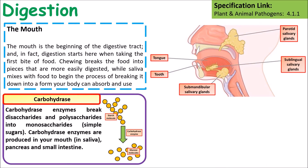The mouth is the beginning of the digestive tract. In the mouth we chew food, which helps increase its surface area. We also add saliva, which lubricates the food and contains a carbohydrase called amylase. Amylase breaks down starch molecules into glucose molecules.